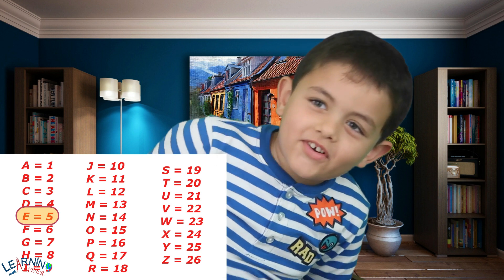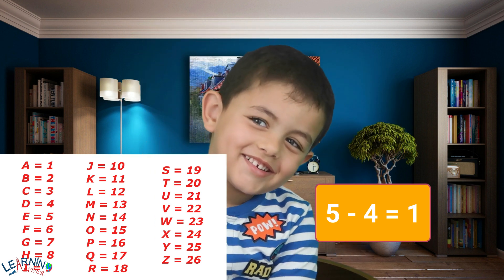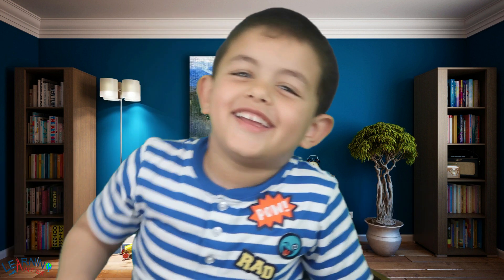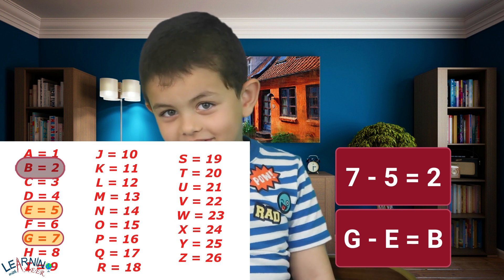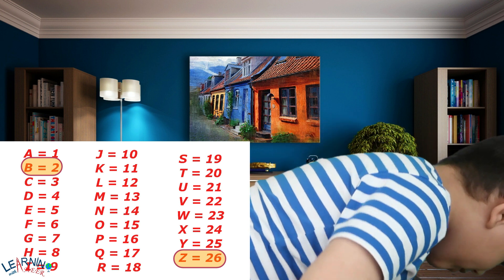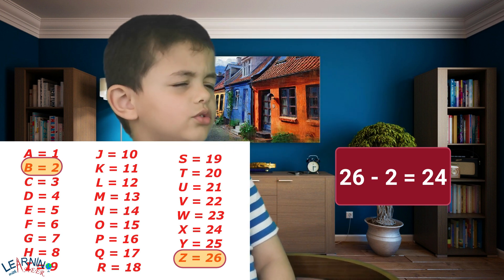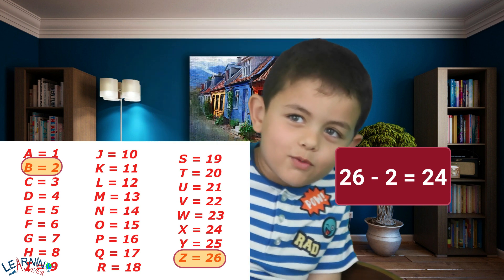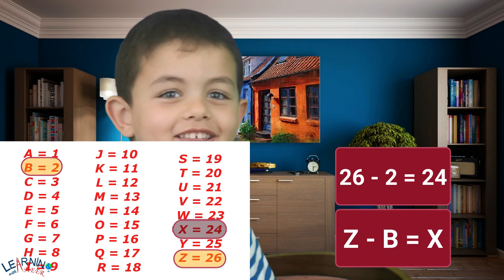How about E minus D? The value of E is 5 and D is 4. So 5 minus 4 is 1, and 1 is the value of A. So E minus D is A. How about G minus E? B. Good job. How about Z minus B? Z is number 26, B is number 2. So 26 minus 2 is 24 — and 24 is X. You got it, excellent!